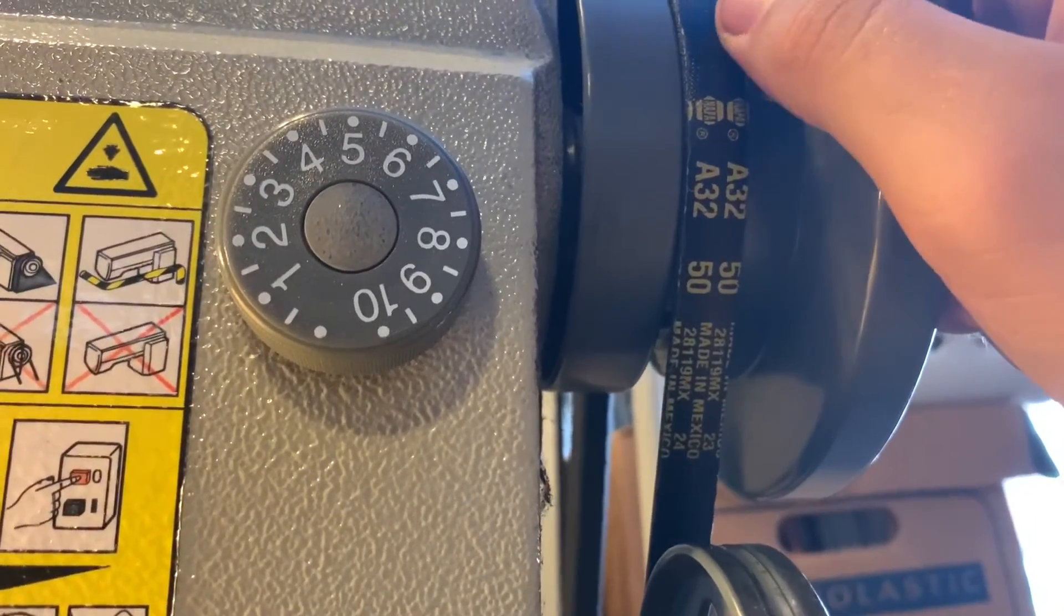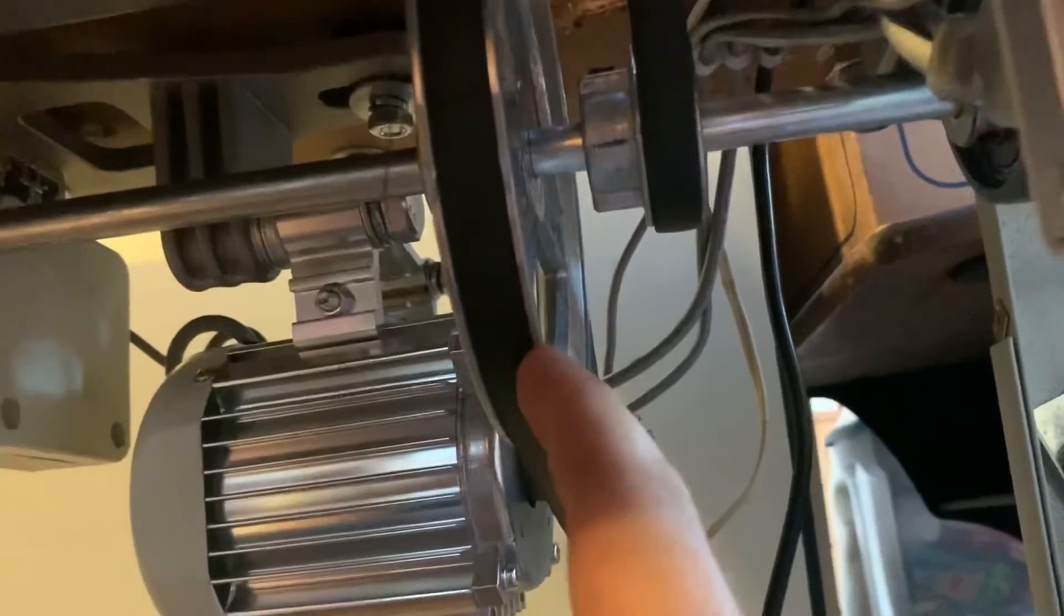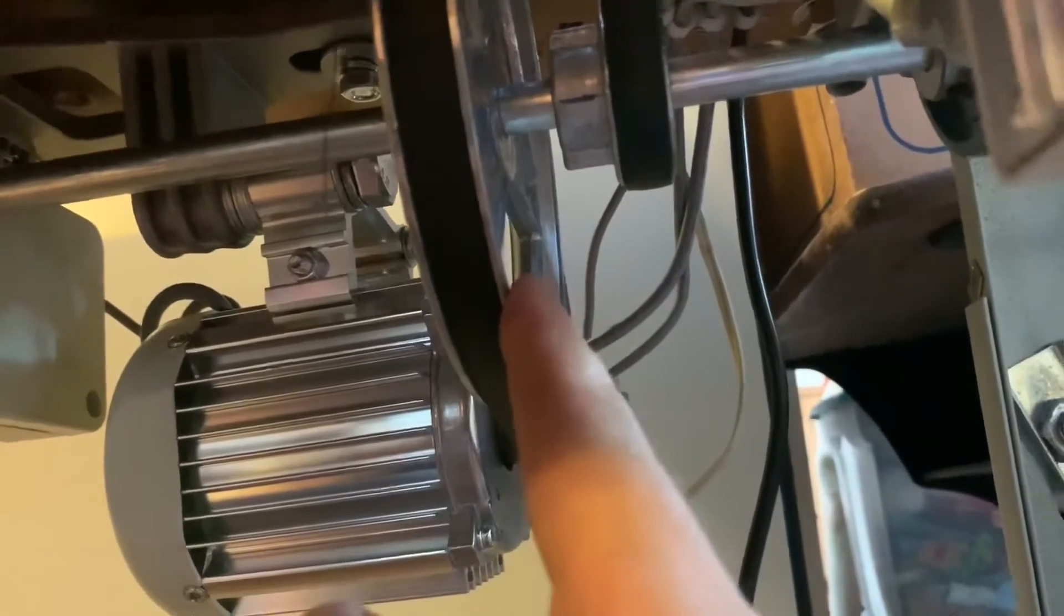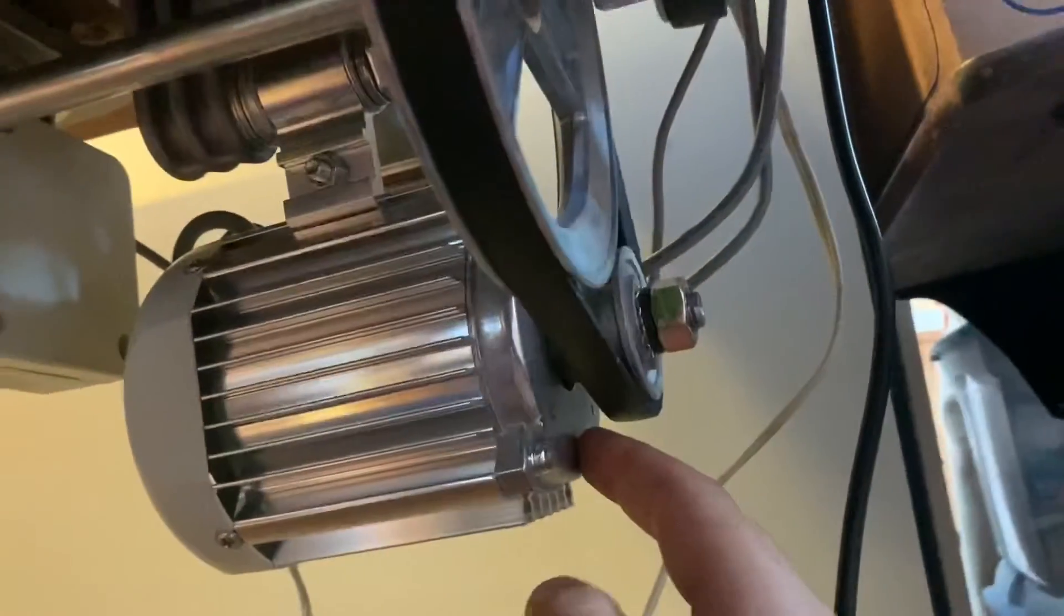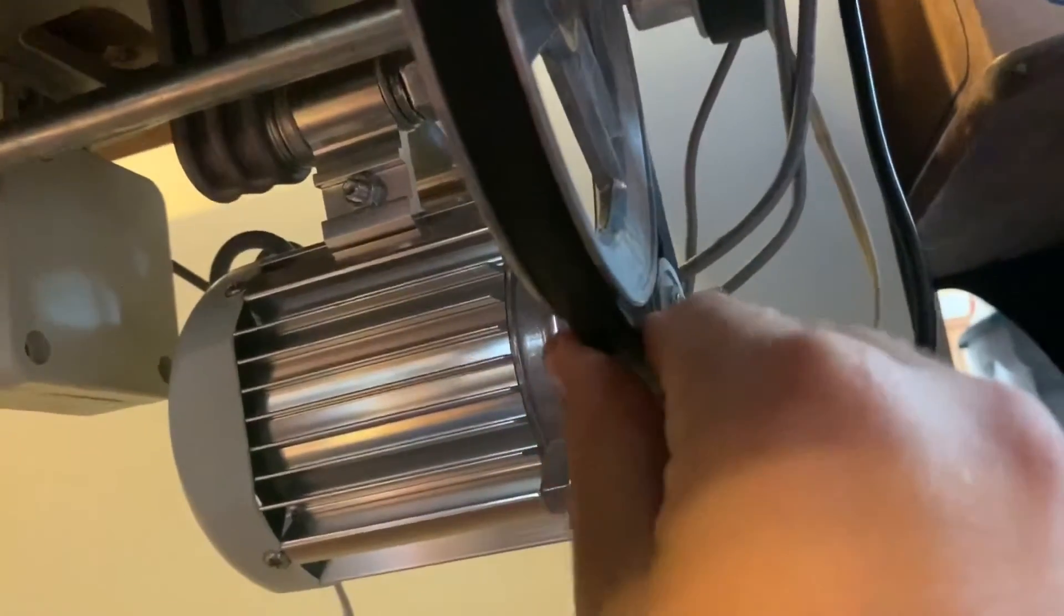It's the one problem I had that if I got a belt that was the right size for this one and the sewing machine wheel, then it would not fit in my pulleys. It would be too small for my pulleys. So I just went to Napa and got these larger A belts, or I think these are 4L belts.